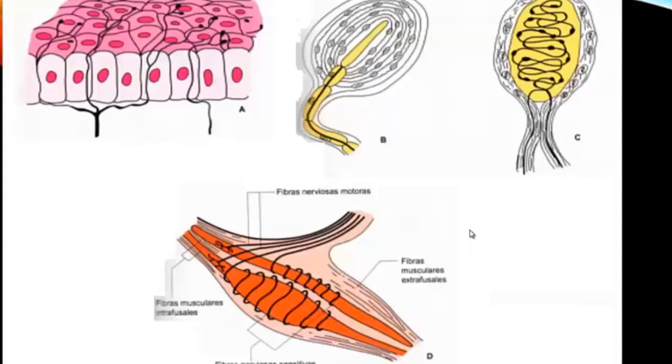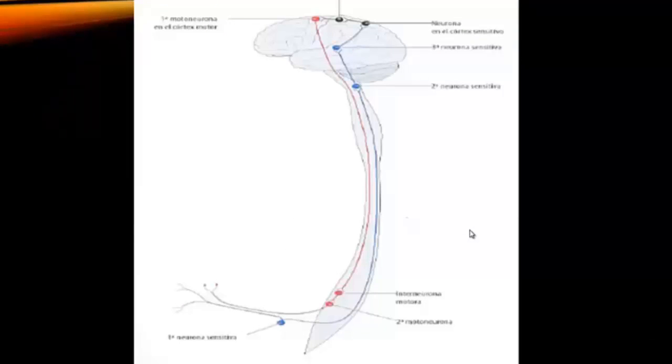Therefore, we can say these organs capture tactile stimuli, fine or epicritic touch, coarse tactile or protopathic touch, proprioceptive sensation, temperature, pain, and deep pressure, both conscious and unconscious.